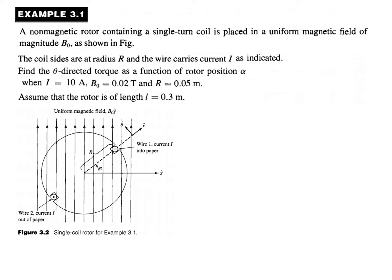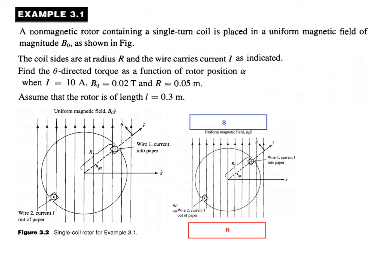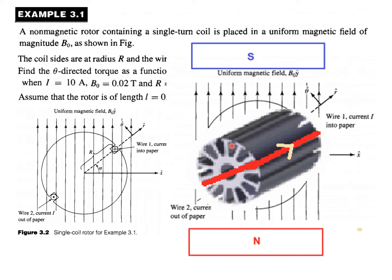Let us see example 3.1. A non-magnetic rotor containing a single-turn coil is placed in a magnetic field of magnitude B₀ as shown in the figure. This is the rotor and it has only one coil. We have north and south magnets, the magnetic field in between, and a single-turn coil on a non-magnetic rotor.